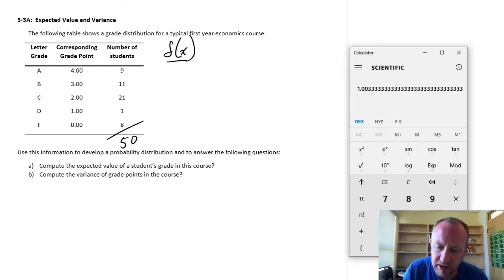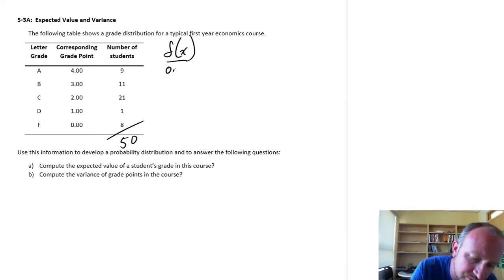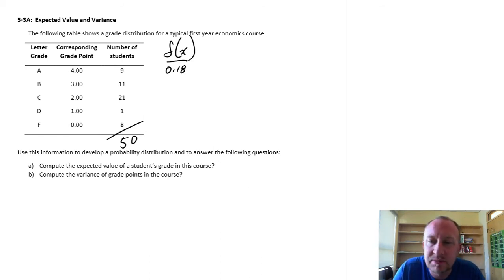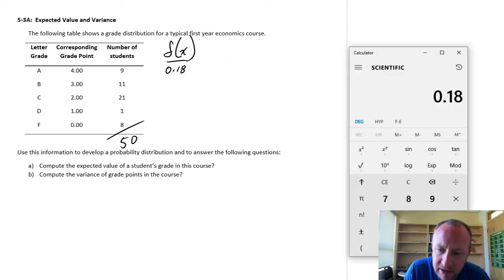So if I get my calculator, I'm going to have 9 out of 50 students, so 0.18. So basically all this means is that a randomly selected student has an 18% chance or a probability of 0.18 that that student received an A in this course. So as we go through and calculate the rest of these probabilities, I'm going to do this quickly because we've done this already in exercise 5.2.